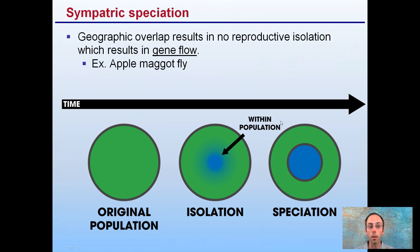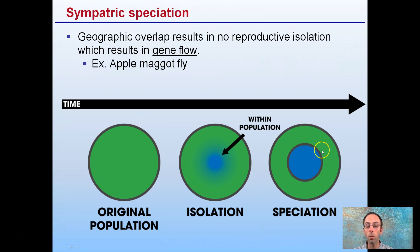Lastly, we have sympatric speciation, which is genetic overlap that results in no reproductive isolation, and does result in gene flow. We have our original population and a population within a population. As a result, gene flow is easily able to happen with no reproductive isolation, so we can get the development of these species. This population originated within the original, and there is gene flow because there is overlap occurring between these two different species.